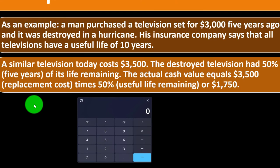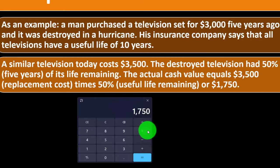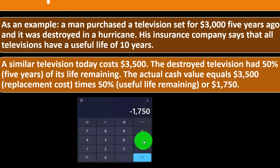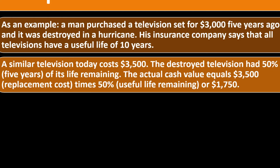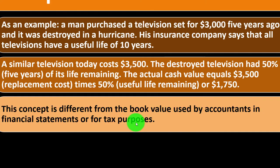The math works out like this: $3,500 to replace it, divided by 10 years useful life, equals $350 per year. The TV is five years old, so times five — that gives $1,750 in depreciation. Three thousand five hundred minus one thousand seven fifty equals one thousand seven fifty, which is 50 percent of the replacement cost. They give you the $1,750, and you could try to argue with them about the assumed useful life — but that's just the general idea.